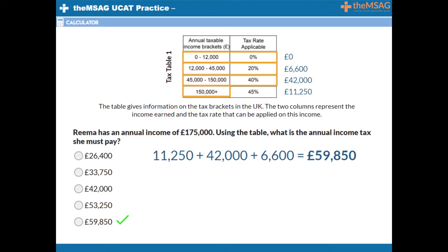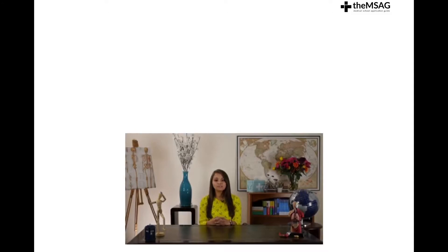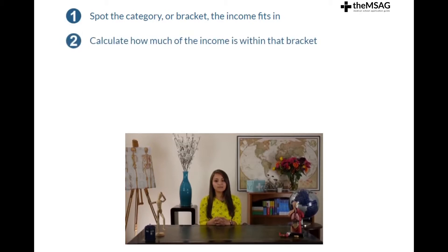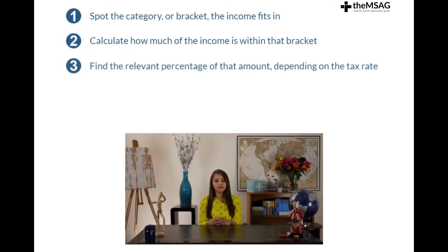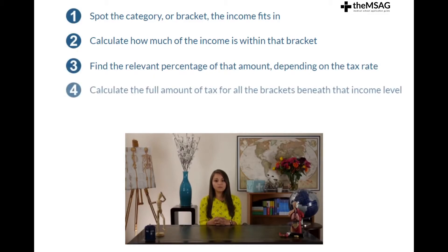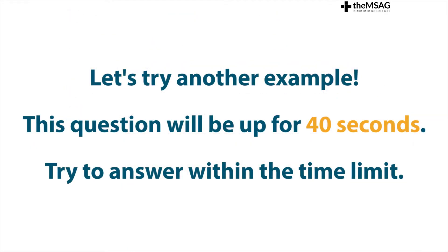You now have the tools you need to understand tax table calculations. In summary: spot the category or bracket that income fits in; calculate how much the income is within that bracket; find the relative percentage of that amount depending on the tax rate; calculate the full amount of the tax for all the brackets beneath that income level; and finally add them all together for the total tax payable. Use this 5-step approach to tackle the next question.